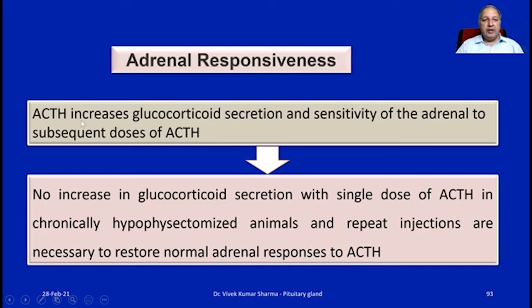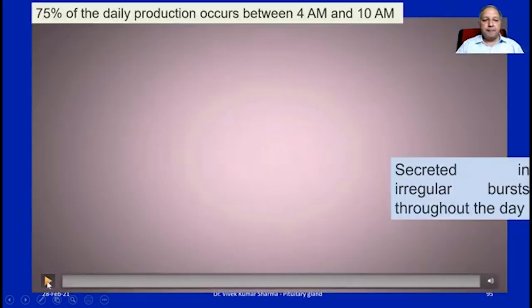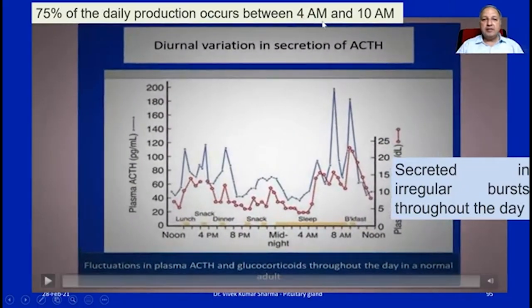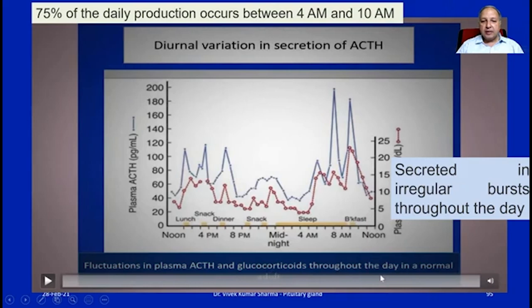In nutshell, we need ACTH hormone for there to be a response from the adrenal cortex — that is, for the adrenal cortex to secrete more glucocorticoids. Seventy-five percent of the daily production of ACTH occurs in the early hours between 4am and 10am, and it is secreted in irregular bursts throughout the day. There are fluctuations in plasma ACTH and glucocorticoids throughout the day in a normal adult, showing diurnal variation with most production in the early morning.